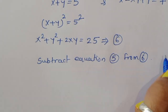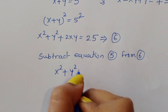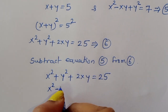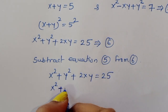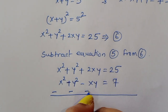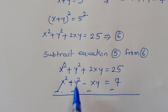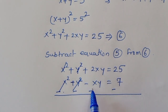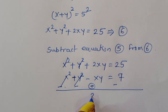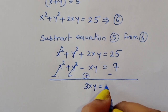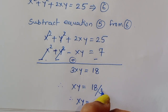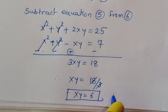Subtracting equation 5 from equation 6: (x² + 2xy + y²) − (x² − xy + y²) = 25 − 7, giving 3xy = 18, so xy = 6. This is equation 7.